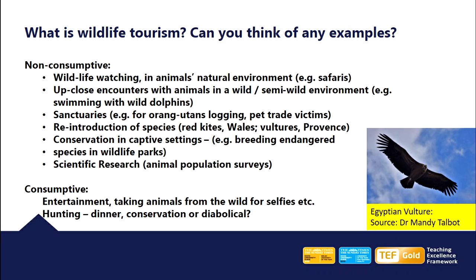Consumptive forms of wildlife tourism include hunting for dinner, fishing, and conservation hunting — for example, there are many deer in places like Scotland, and so shooting is used to manage numbers. Or it could be more diabolical examples of hunting. For example, lions are bred in South Africa particularly for the hunting industry in order to be shot. Other examples include entertainment, where animals are often taken from the wild for selfies, and very often the parents are shot. So we can see that we've got some good and bad forms of wildlife tourism here.